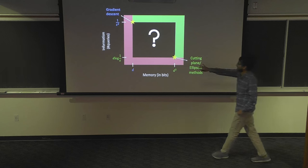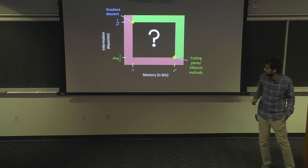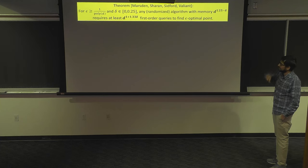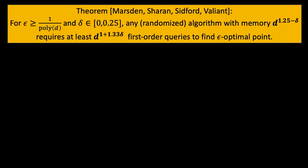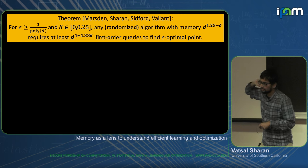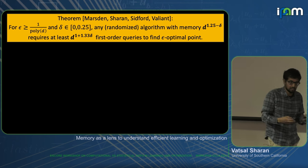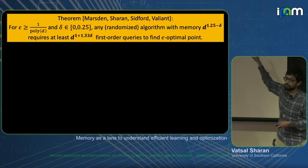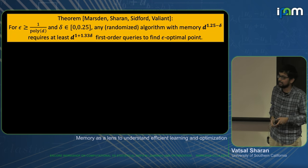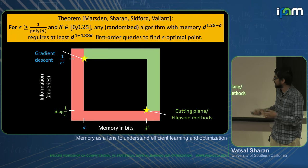Going back to the picture: what we show is the following theorem. There exists some epsilon which is 1 over poly(d), and for any delta in (0, 0.25), any algorithm — even if it is randomized — if it uses memory d^(1.25 − δ), then it must use d^(1 + 1.33δ) first-order queries in order to find a point which is epsilon-optimal. It's a bit of a mouthful, so it's probably easiest to just visualize this.